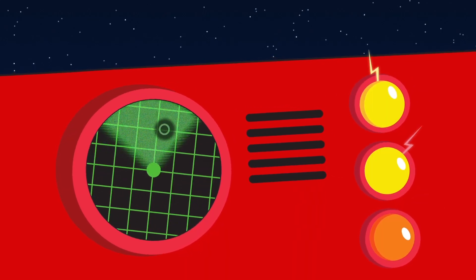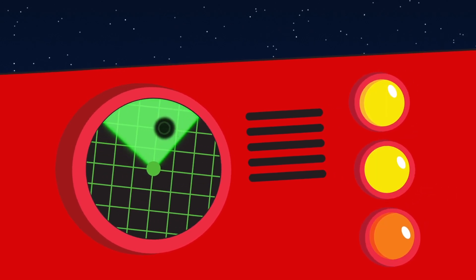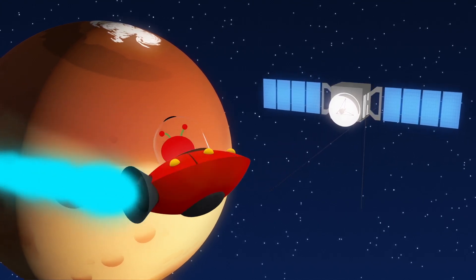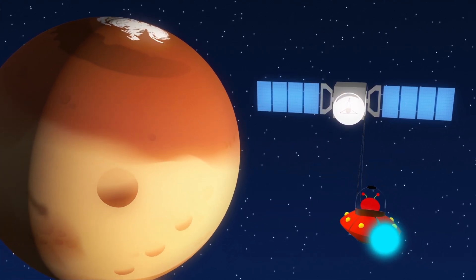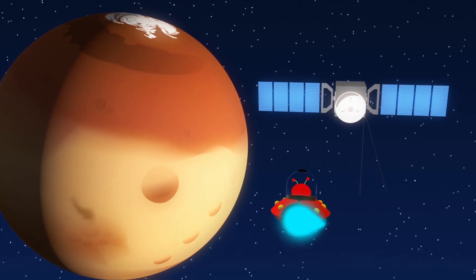My spaceship is picking up a signal. Maybe someone's trying to say hello. I'm going to find out. The signal is being sent by this probe. It's the European Space Agency's Mars Express spacecraft. I definitely know where we are now. This is the planet Mars.